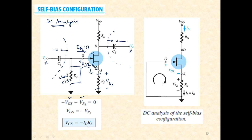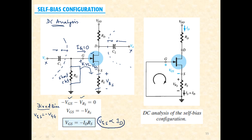For fixed bias, VGS was equal to minus VGG — a fixed value. However, here VGS is linearly dependent upon ID: as ID increases VGS increases, and as VGS is made higher ID also becomes higher. This linear relationship is extremely important for understanding the self-bias network solution.